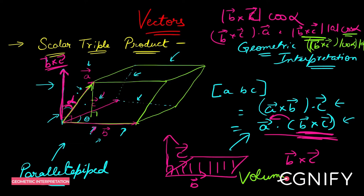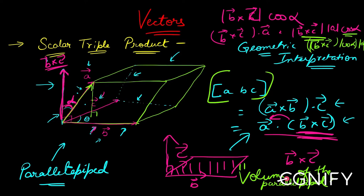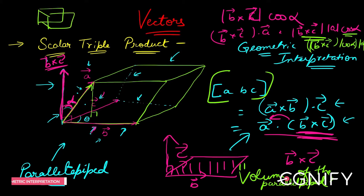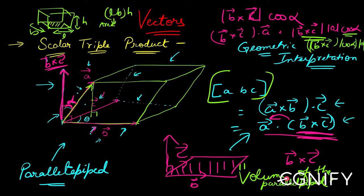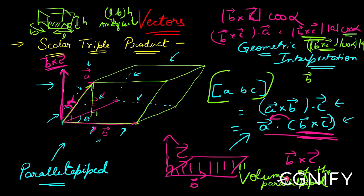This box product is giving you the volume of the parallelepiped. Volume is base area times height — just like a cuboid with length l, breadth b, and height h has volume l×b×h, where l×b is the base area multiplied by the altitude. The same logic applies here. It's better to look at it as mod(b cross c) times a·cos(alpha).